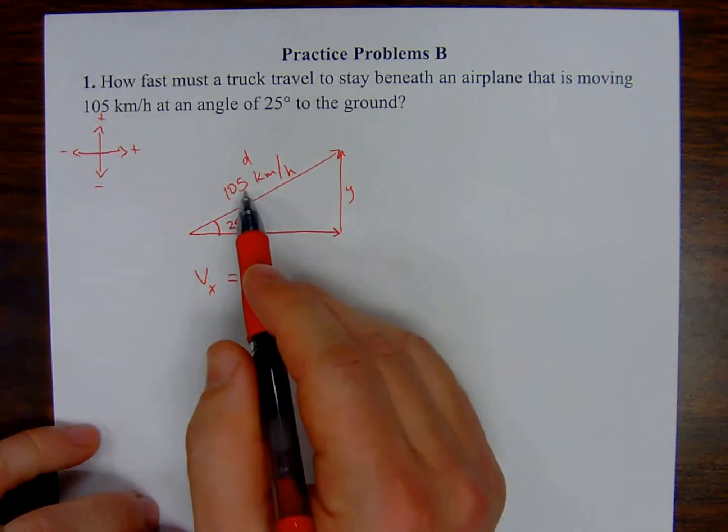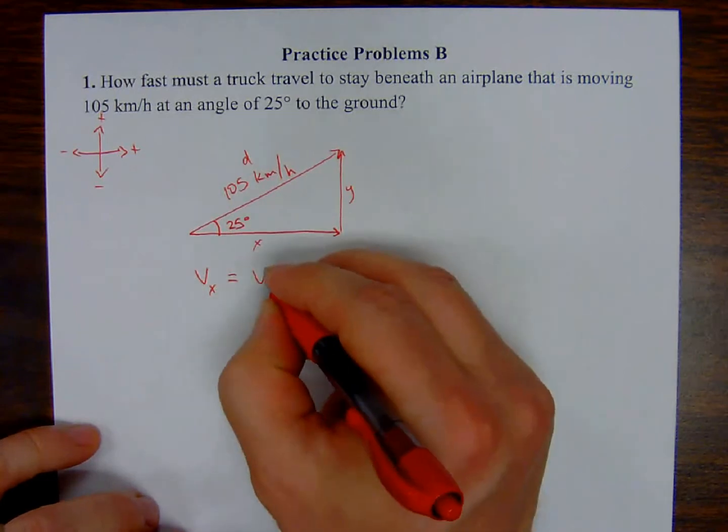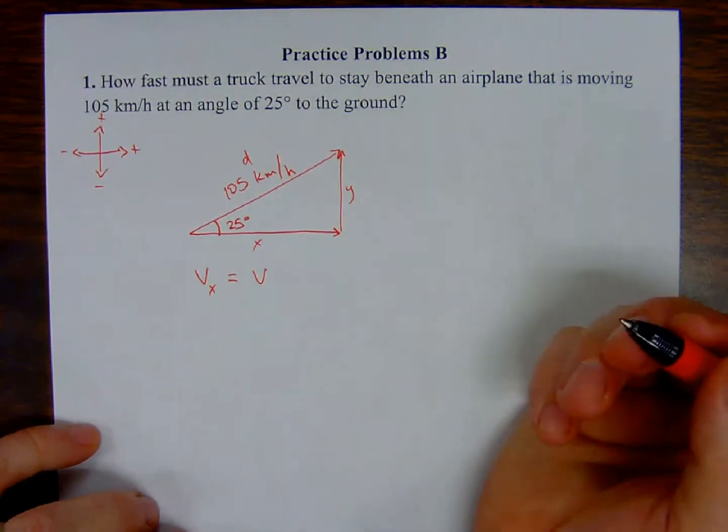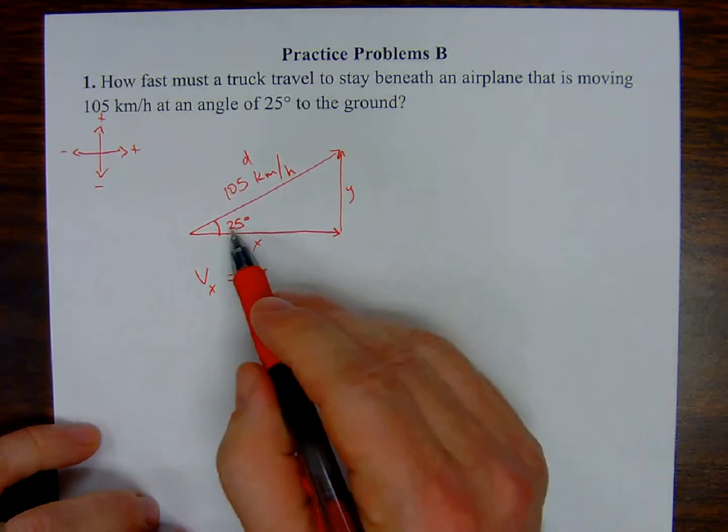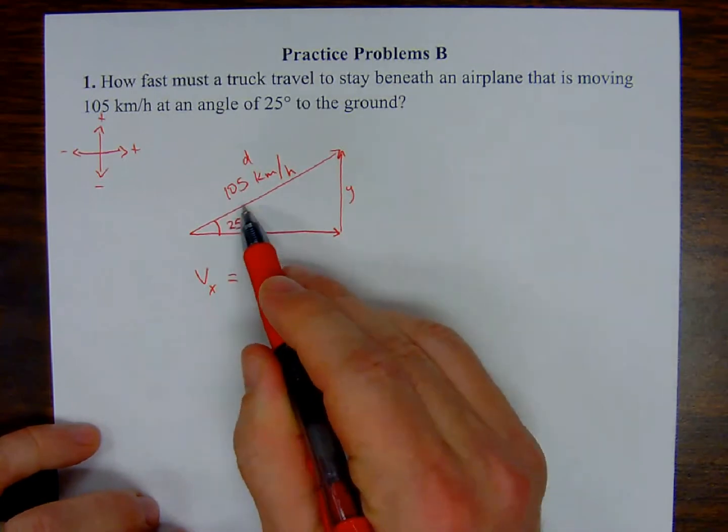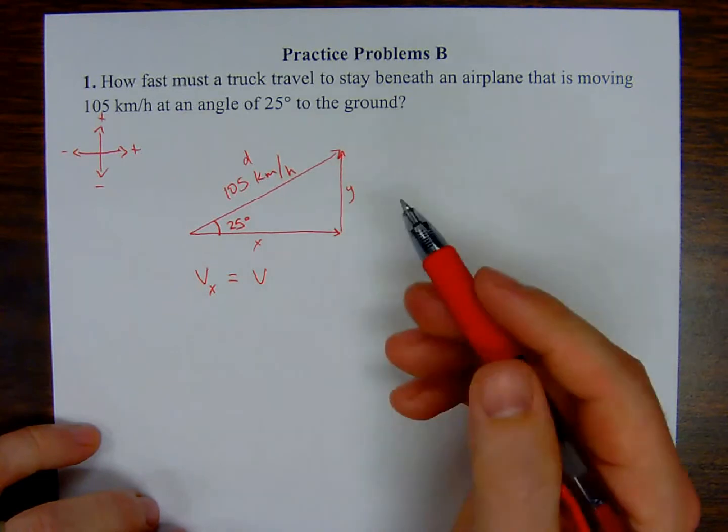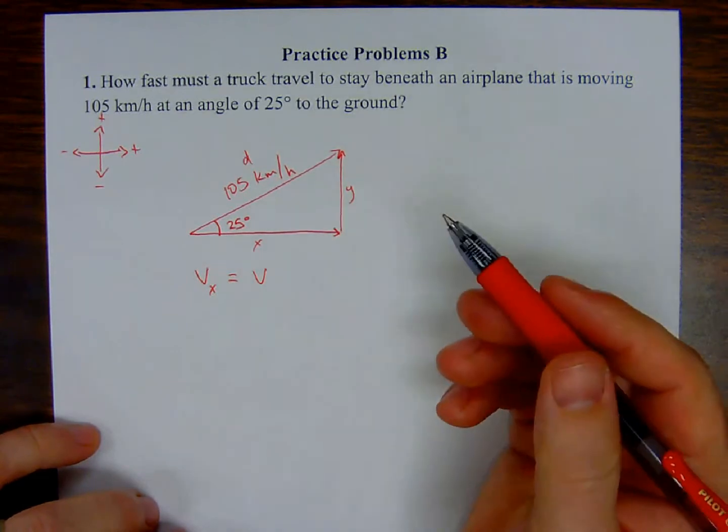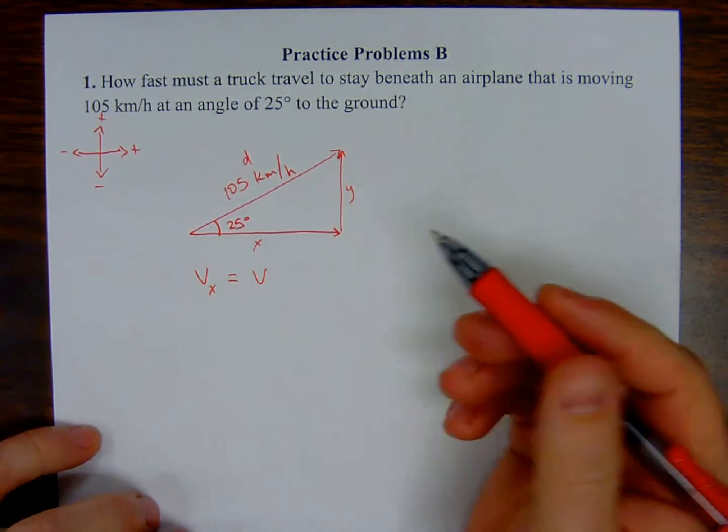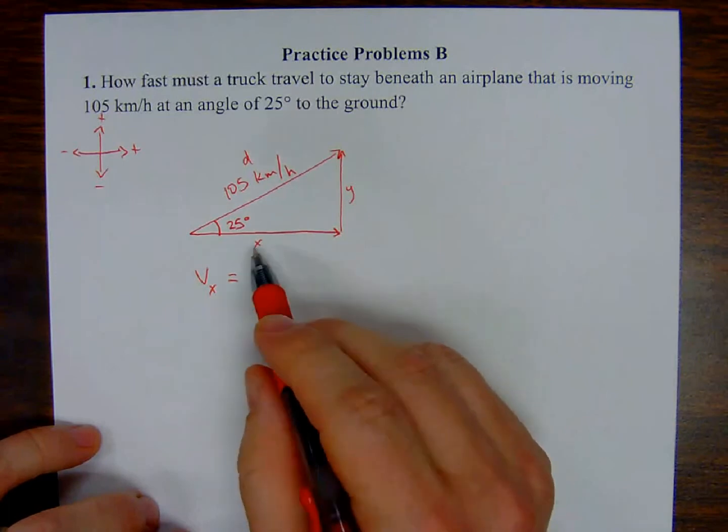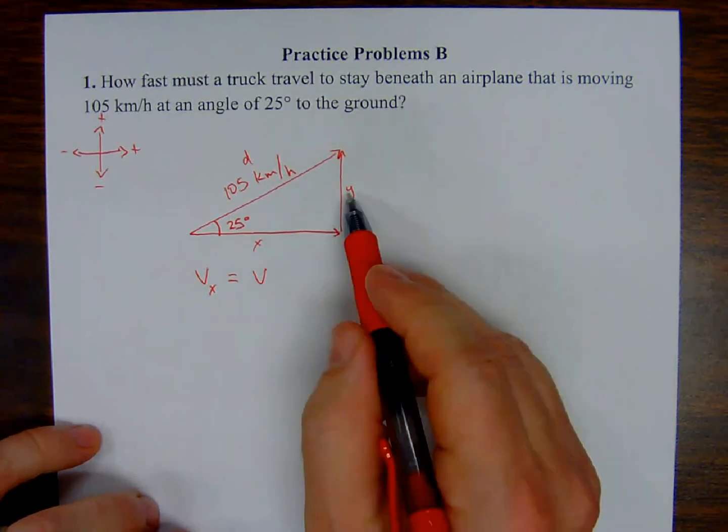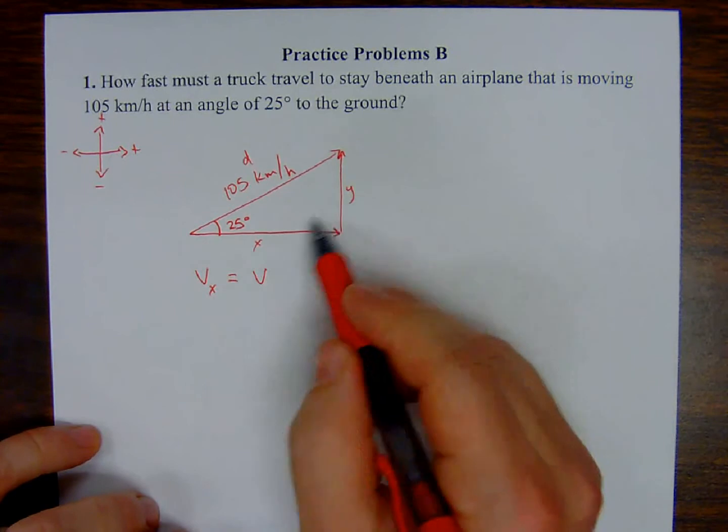But the angle at which this velocity is taking place has a significant bearing. It's the other piece of information that I need to figure out the size, the magnitude of these component vectors. So I need to compare this with the cosine of the angle.